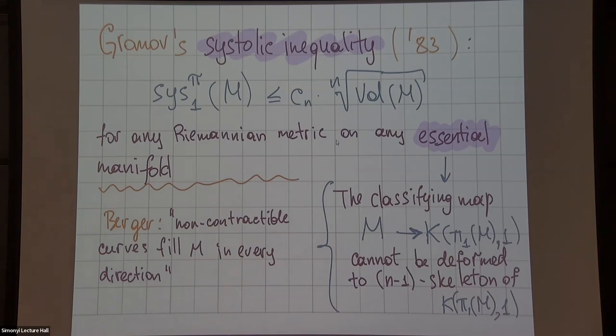Informally, this can be thought of as the following condition: that non-contractible curves, loops in your manifold, they fill your manifold in every direction. A model example to keep in mind of a non-essential manifold is S1 cross S2.